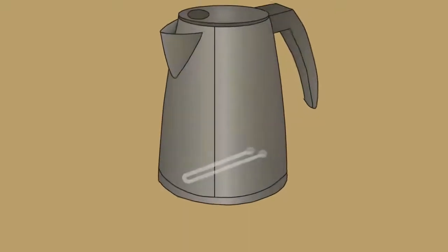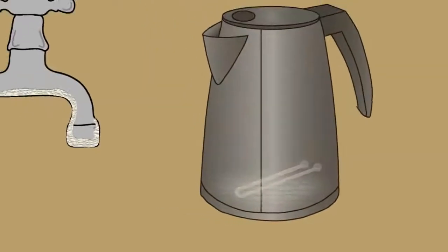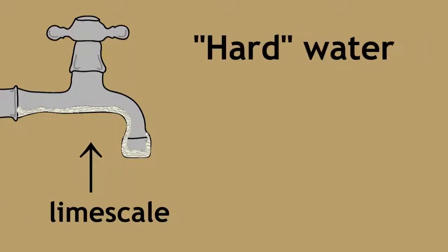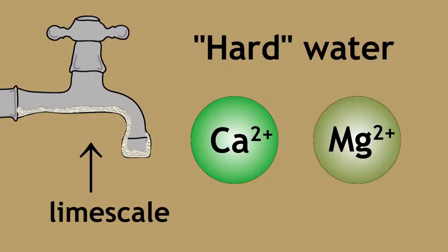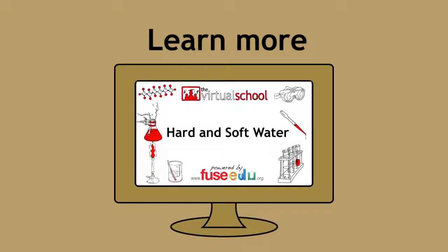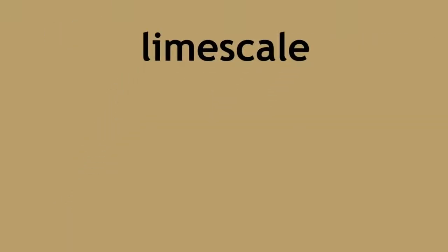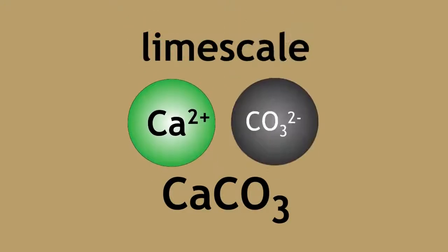Have a look inside your water kettle. You may see white deposits on the heating element or off-white particulates at the bottom. You may even find it around your water faucets. This is limescale, caused by hard water — water with many dissolved calcium and magnesium ions. Limescale is simply calcium carbonate formed when these dissolved calcium ions combine with carbonate ions.